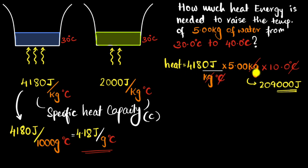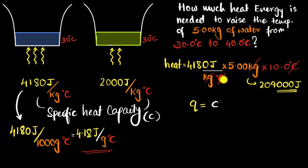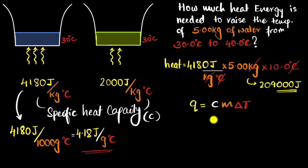We can now generalize and write an equation based on this intuition. The amount of heat energy supplied, Q, equals c times m times delta T. Here c is the heat energy per kilogram per degree Celsius. If you have m kilograms, you multiply by m, and if you're increasing the temperature by delta T degrees Celsius, you multiply by delta T. This is an important equation for calculations. C represents heat energy per kilogram per degree Celsius, so multiply by mass m and temperature change delta T.